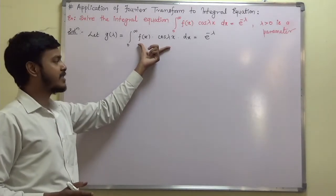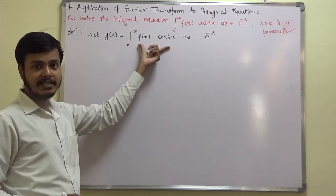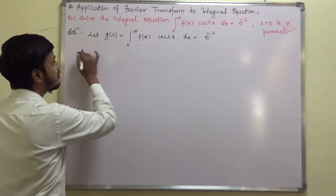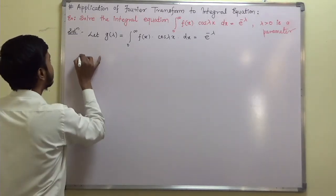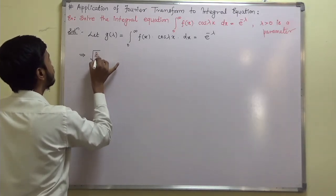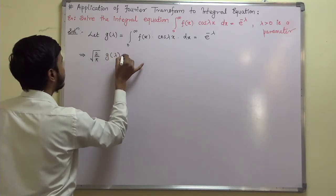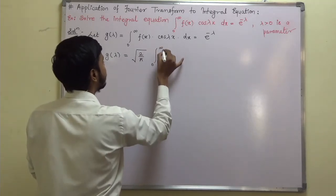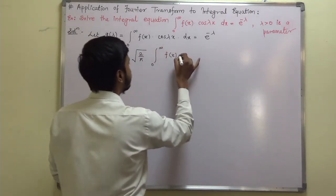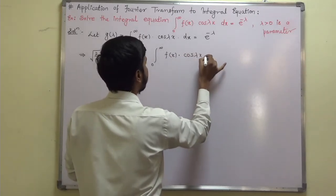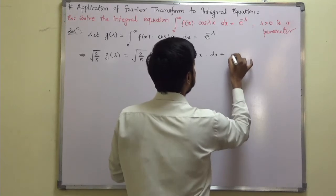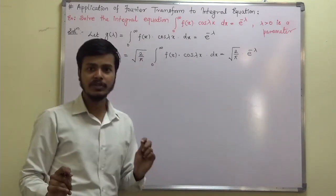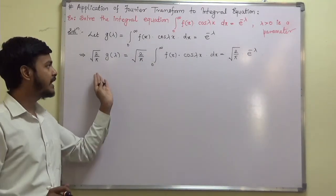Now this somewhat looks like a Fourier cosine transform. The only missing term is √(2/π). So I am going to multiply throughout by √(2/π). This implies: √(2/π) · g(λ) = √(2/π) · integration from 0 to infinity of f(x) · cos(λx) dx = √(2/π) · e^(−λ).